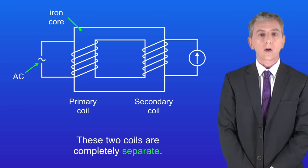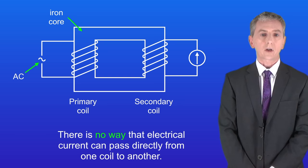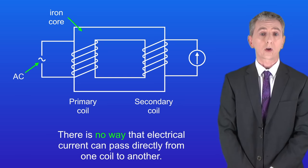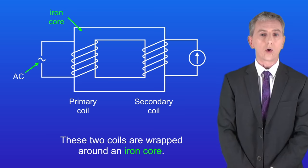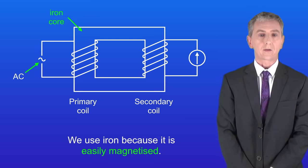These two coils are completely separate. There's no way that electrical current can pass directly from one coil to another. The coils are wrapped around an iron core, and we use iron because it's easily magnetized.